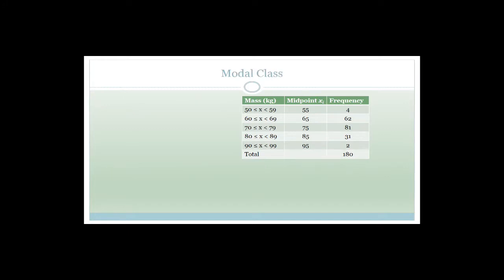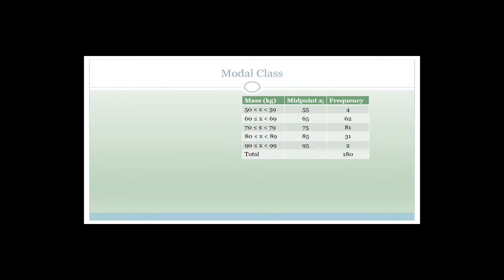Modal class is one of the easiest — you just look for the group with the highest frequency. Here that is 81, in the 70 to 79 group, with a midpoint of 75. So the modal class is 70 to 79 and the value is 75.